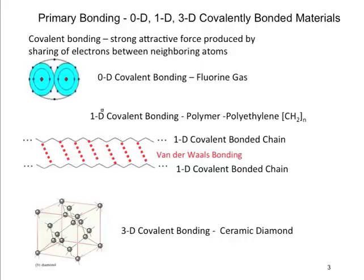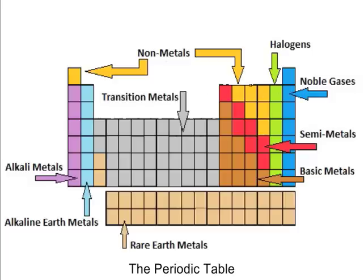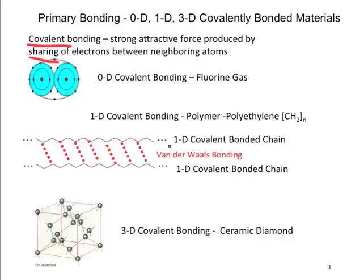The third and final type of primary bonding is covalent bonding. Covalent bonds are very close in strength to ionic bonds, but in general are a little bit weaker. They occur when two or more atoms share valence electrons to complete their outer shells, and in general occur between two nonmetals on the periodic table. There are three types of covalent bonding: 0-D, 1-D, and 3-D.